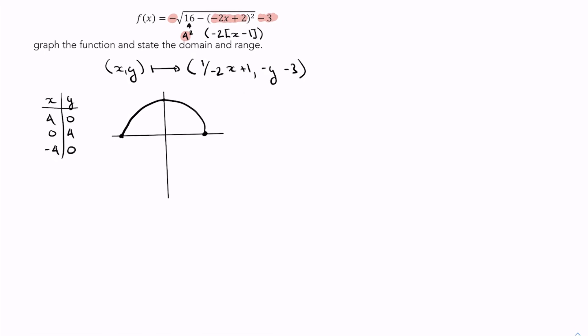So what's our new set of points going to look like? Well, let's begin. (4, 0) is going to go to the point, not negative 2, but (-1, -3). (0, 4) is